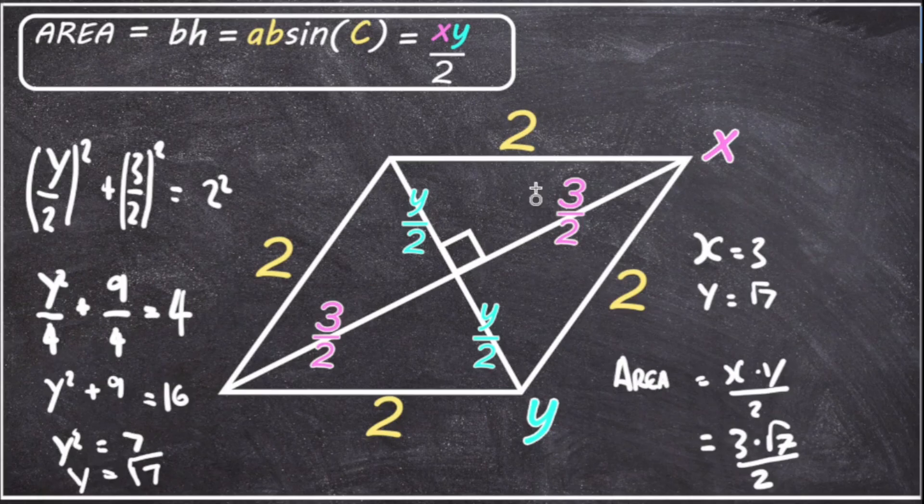And so despite the obstacles of not having enough information initially, we were able to use the properties of parallelograms to get extra values, in this case, the length of the diagonal Y, which enabled us to use one of the formulas to find the area of the parallelogram.